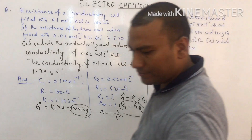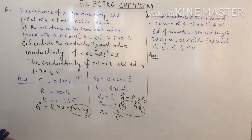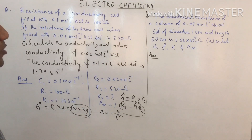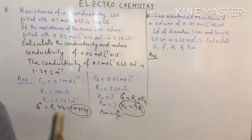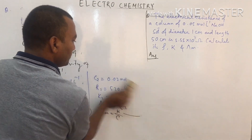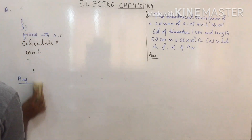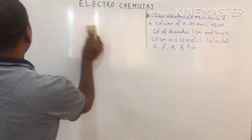Another type of question: the electrical resistance of a column of 0.05 mol/L NaOH solution of diameter 1 cm and length 50 cm is given. Calculate resistivity (ρ), conductivity (κ), and molar conductivity (λm).